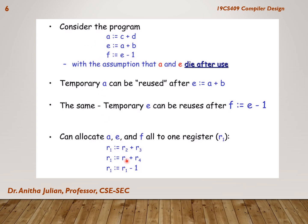For example, r1 = r2 + r3, where a is in r1, c is in r2, d is in r3. Next, calculating e, we can use the same register r1 to compute a + b, so r1 = r1 + r4. Then, since e is no longer in use, we assign that same r1 for f. So a, e and f can all go into the same register, because a and e will die after these three statements.